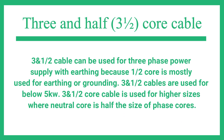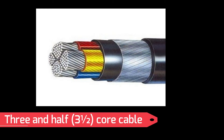Three and half core cables can be used for three phase power supply with earthing, because one half core is mostly used for earthing or grounding. Three and half core cables are used for three phase power supply with earthing and are used for below 5 kilowatts. Three and half core cable is used for higher sizes where the neutral core is half the size of phase cores. Three and half core cable is shown in figure.